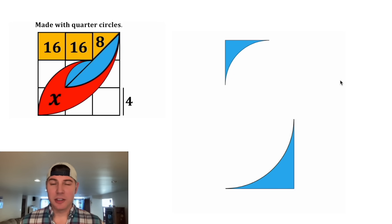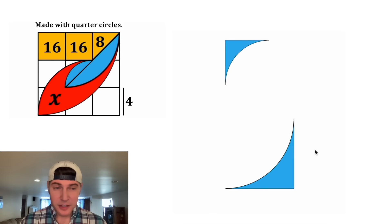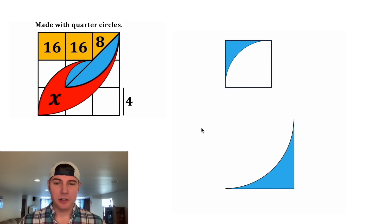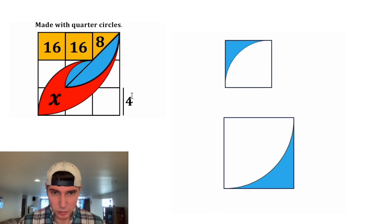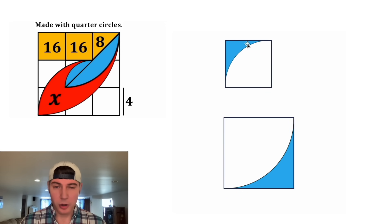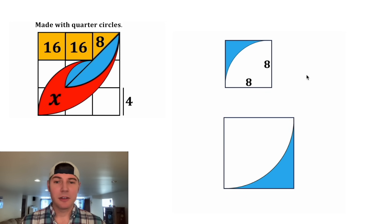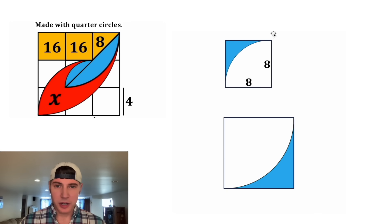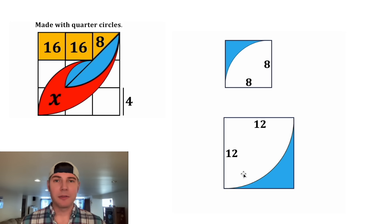Next let's look at these two shapes that I don't know what they're called. To find the area of these regions, we want to complete the squares around them. The side of this square is twice as long as 4, so it's going to be 8 by 8. And the side of this square is going to be 4 times 3, which is 12 by 12.